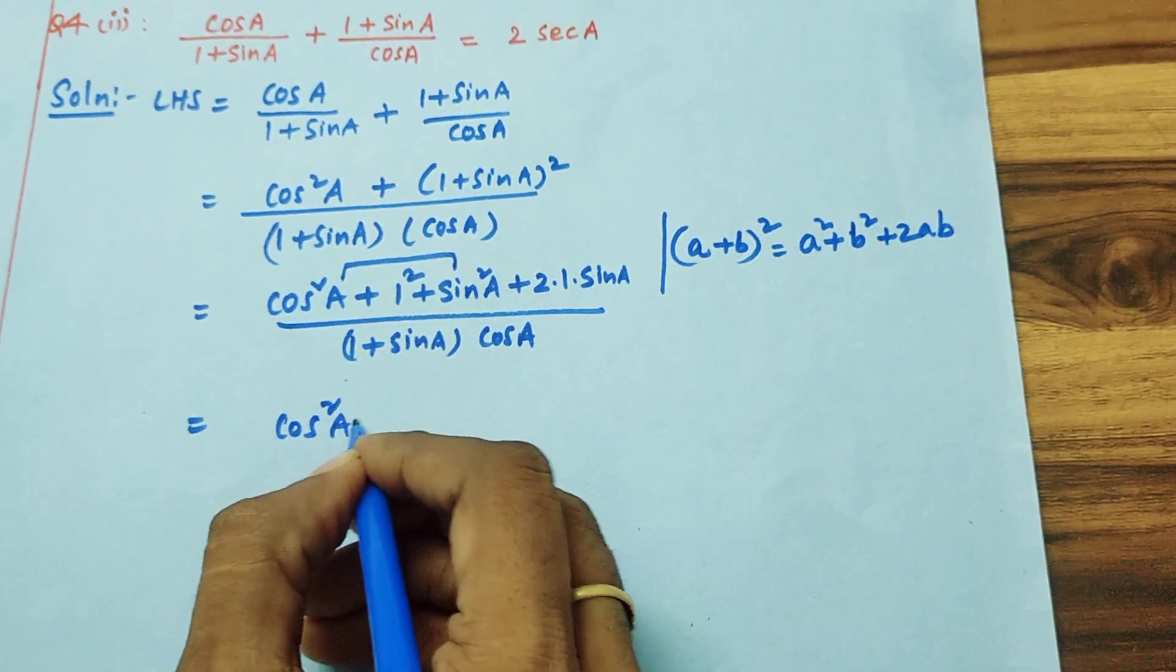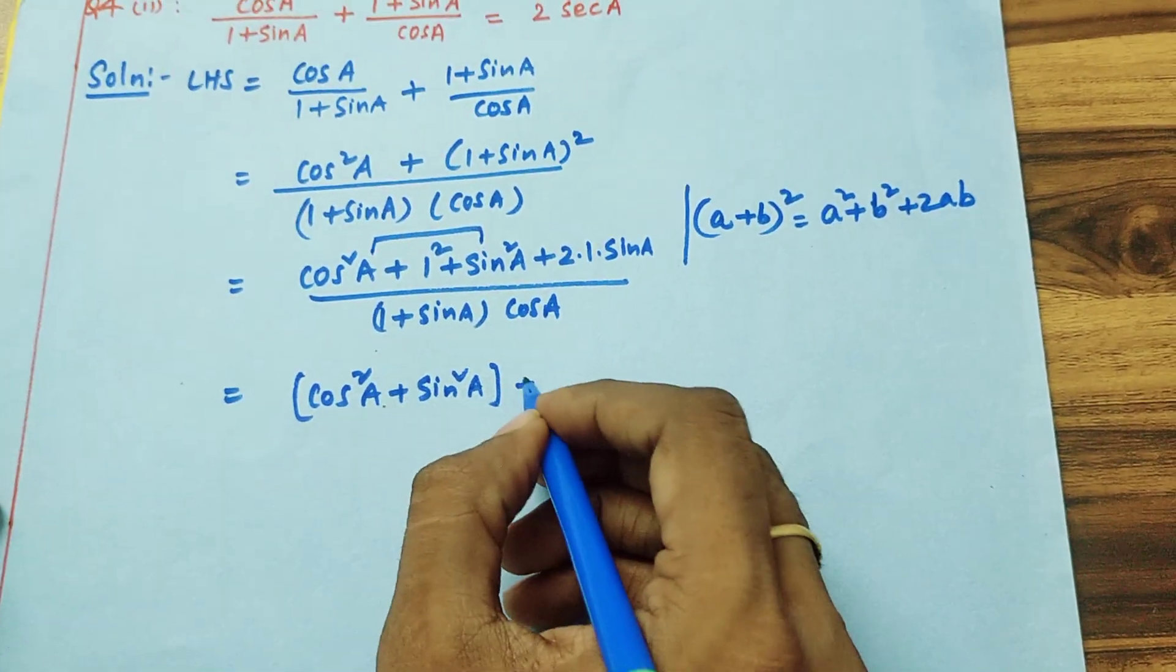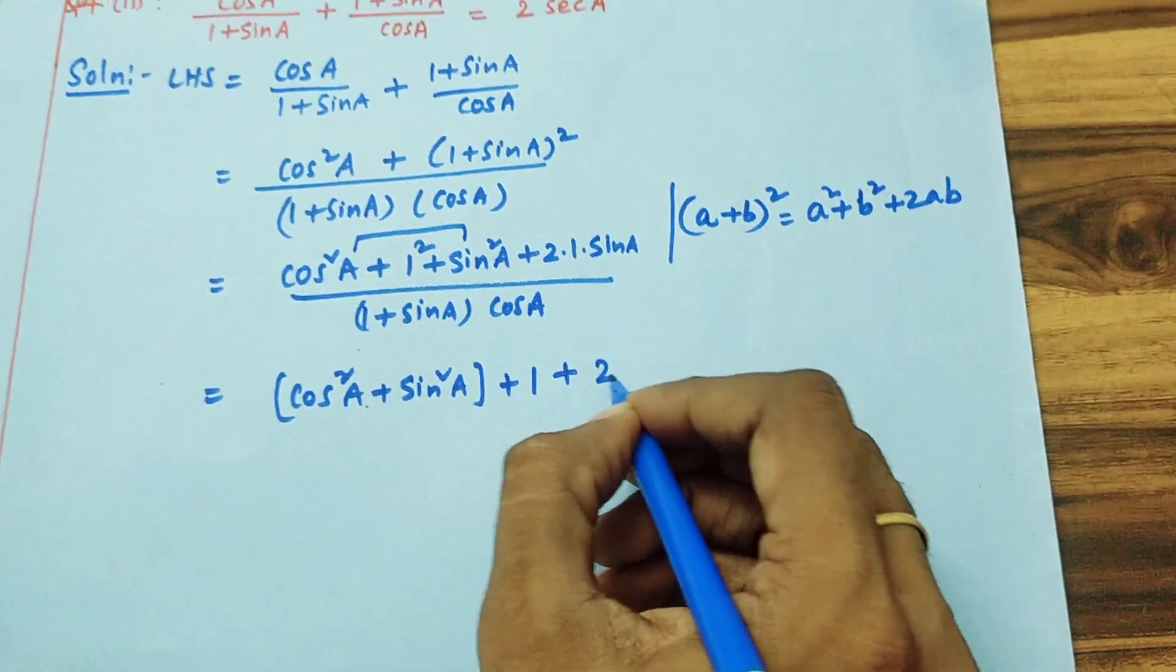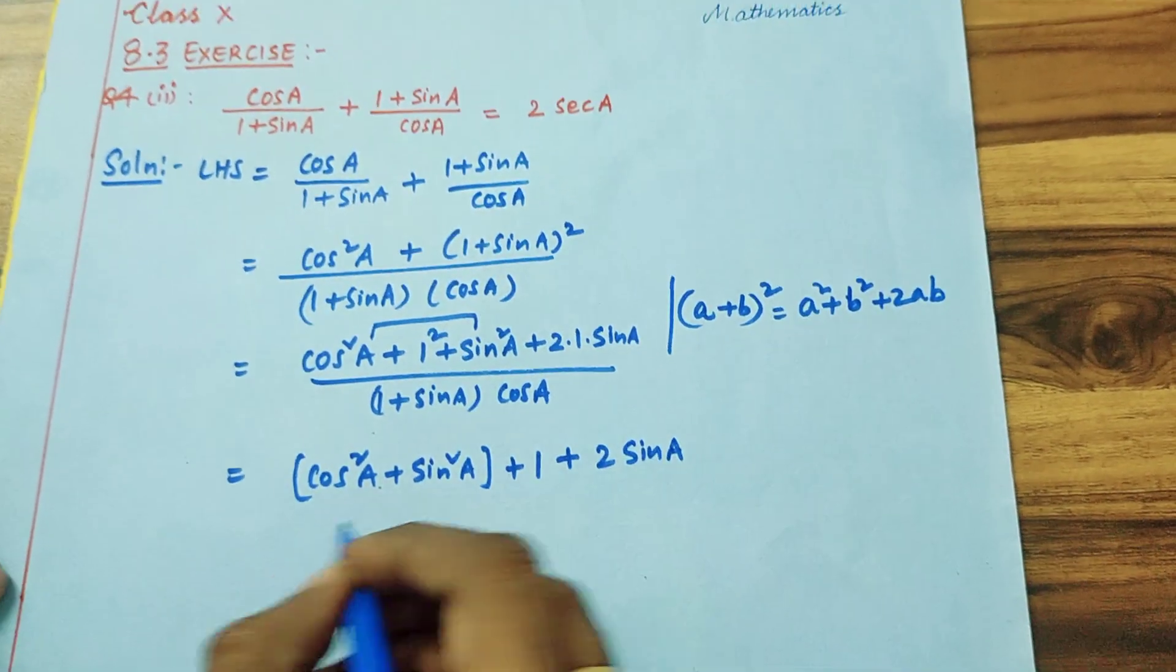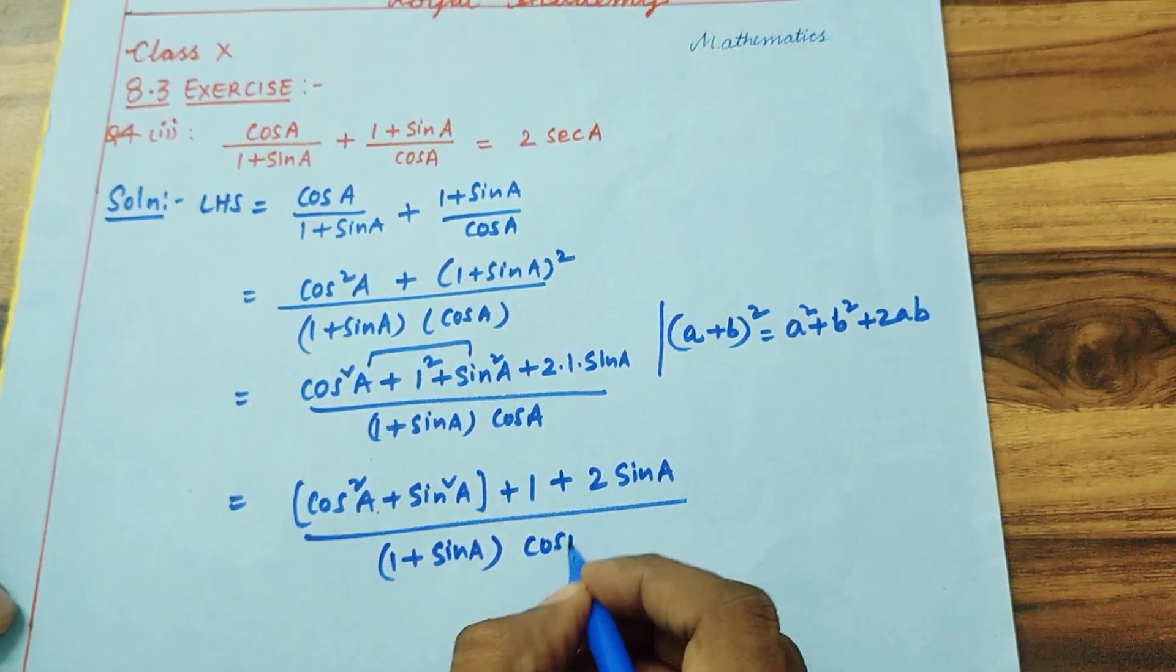Here you can see cos square A plus sin square A plus 1 plus 2 sin A by 1 plus sin A into cos A.